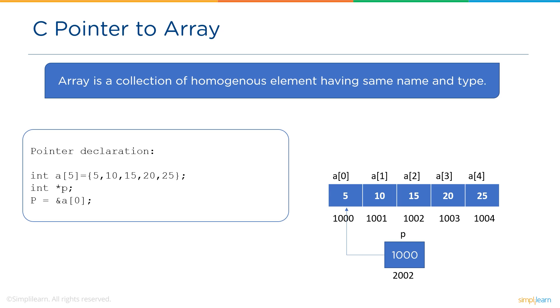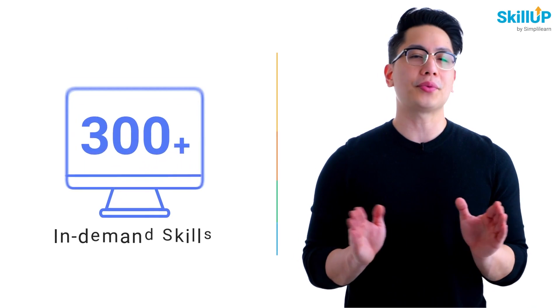Once the pointer is incremented by one, the address 1001 will be stored in pointer p. Now let's look at the example program using a pointer to array.